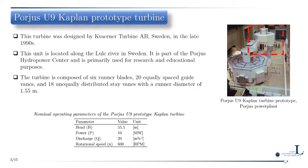The Porsi U9 is a Kaplan prototype turbine designed in the late 1990s, part of the Porsi power plant located along the Lule River and mainly used for research and development. The unit, highlighted in the picture, is a 10 MW unit with a 55-meter head, a flow rate of 20 cubic meters per second, and a rotational frequency of 10 Hz.